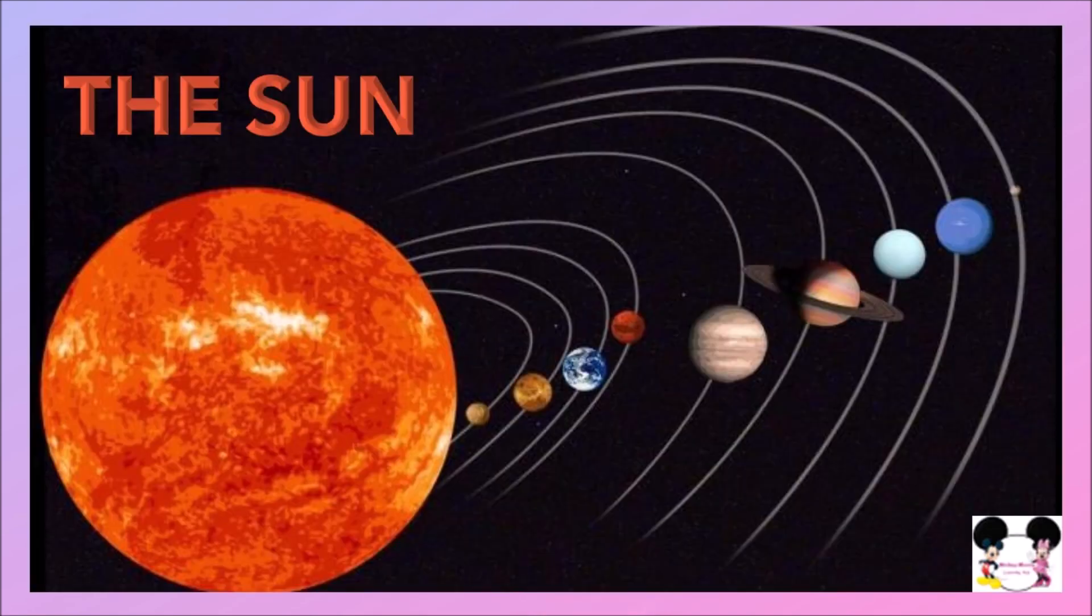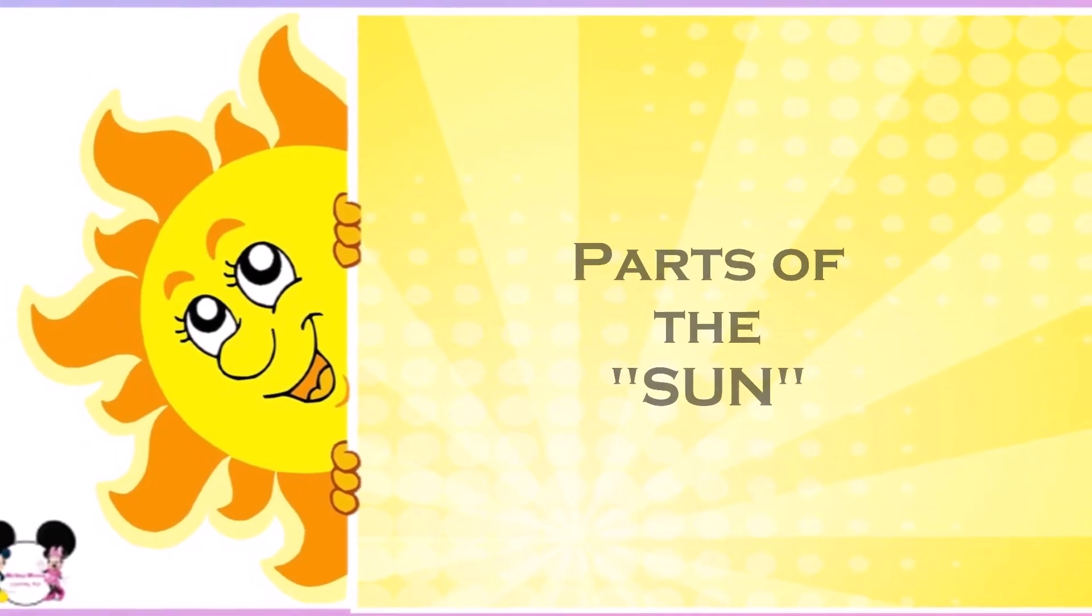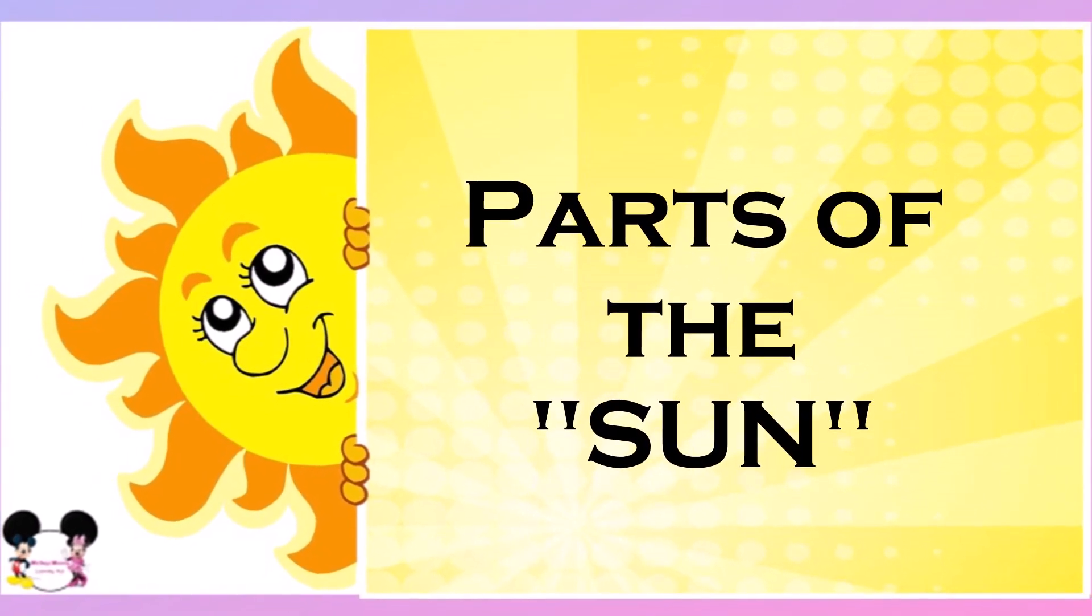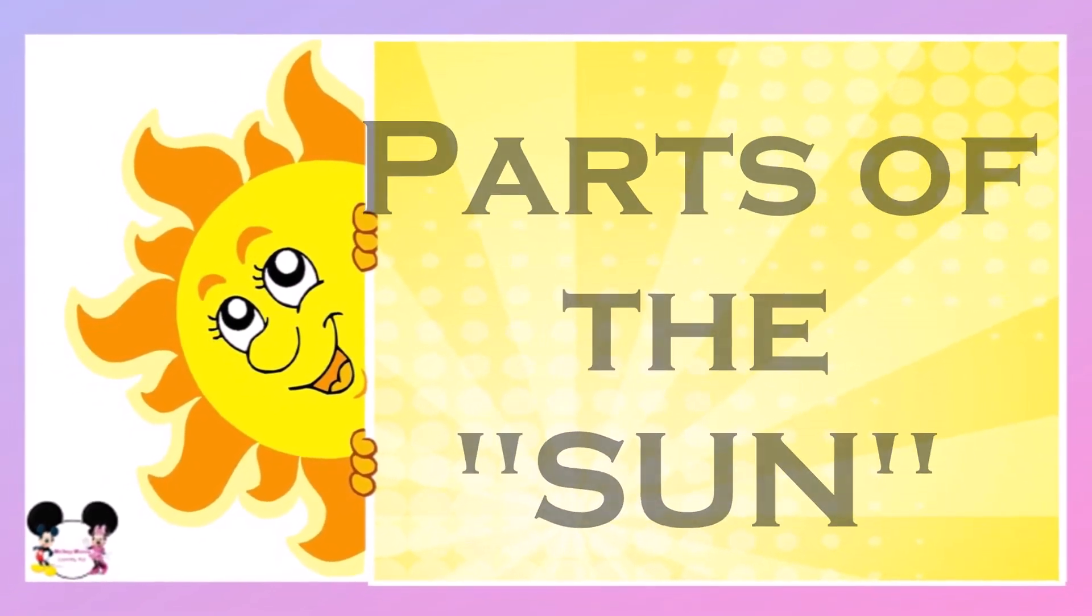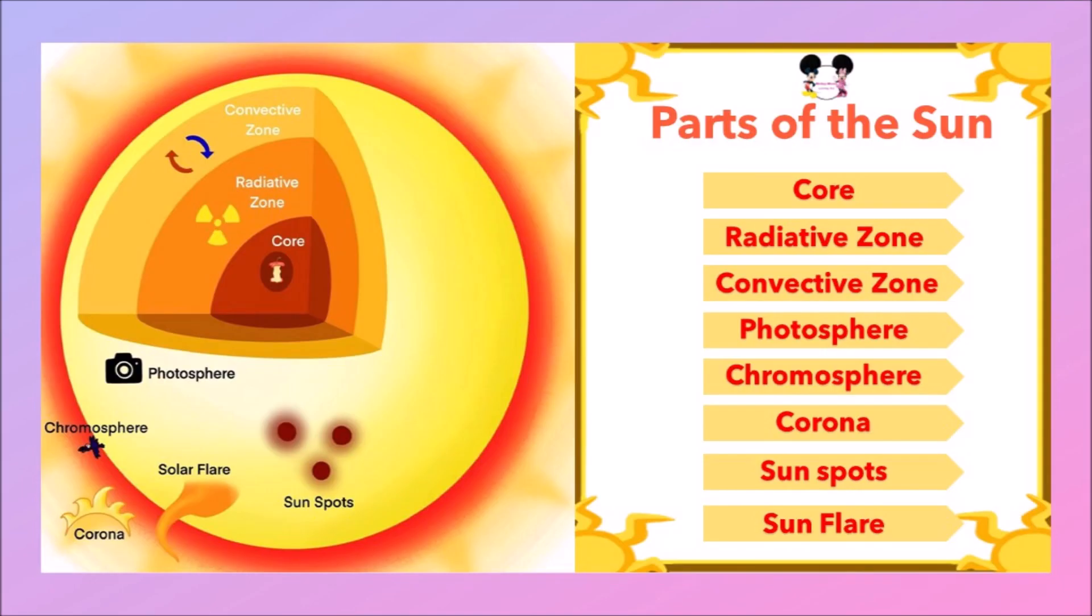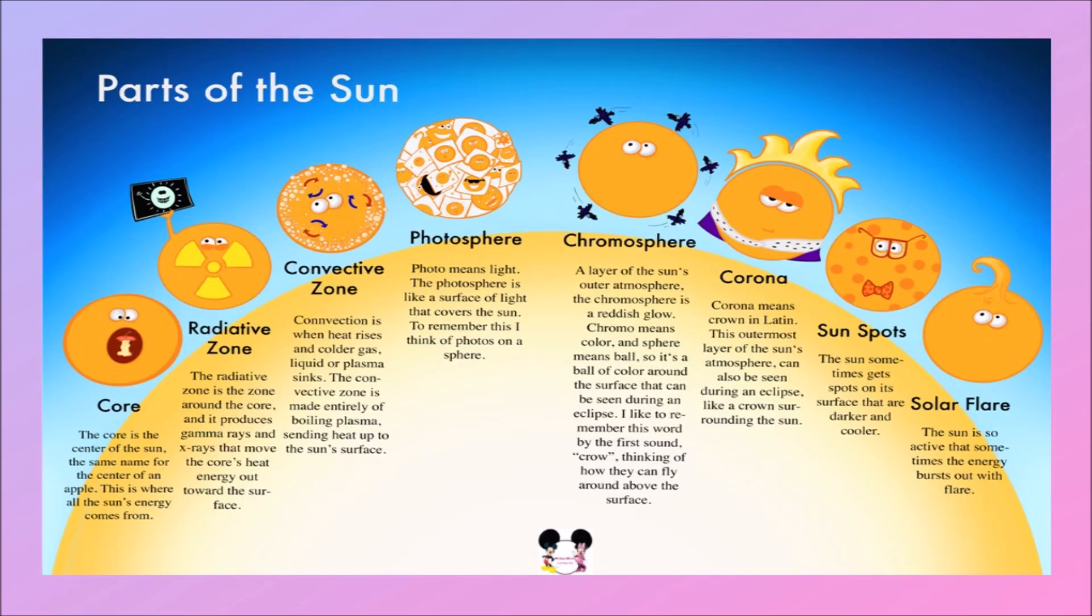Let's see about different parts or layers of the Sun. There are three inner layers in the Sun and five outer layers in the Sun, so there are eight parts in the Sun. These are the parts of the Sun.